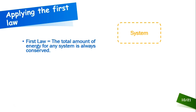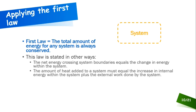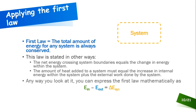The first law of thermodynamics says the total amount of energy for any system is always conserved — another manifestation of the conservation of energy principle. The law can be stated different ways: the net energy crossing system boundaries equals the change in energy within the system, or the energy added to a system equals the increase in internal energy plus the external work done by the system.